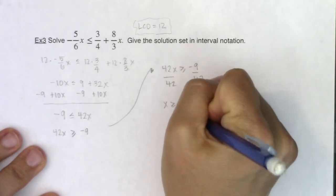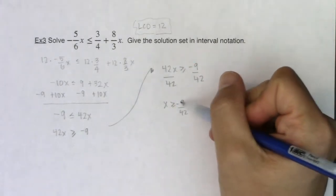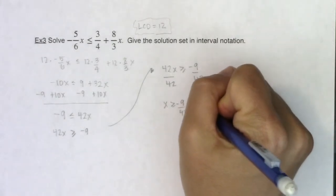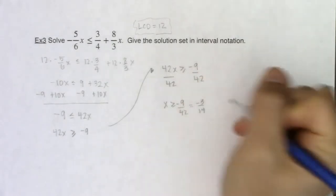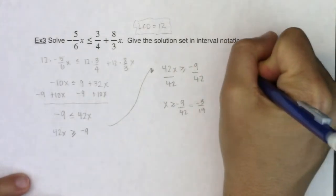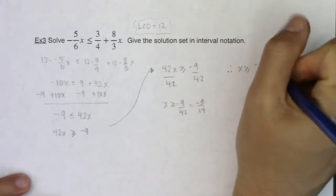I've got negative 9 over 42, but I'm a little suspicious. Those are at least divisible by 3. So they have a greatest common factor. This would be negative 3 over 14. All right, so really, in interval form, my answer is x is greater than or equal to negative 3 over 14.